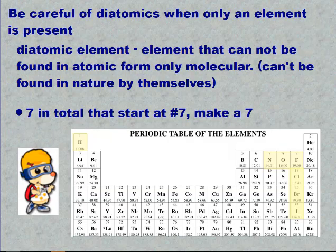Be careful throughout the whole year of diatomics. Diatomics are when an element is present, but it can't be in its atomic form, only its molecular form. In other words, they can't be found in nature by themselves. There's seven diatomic molecules. Hydrogen, and then it starts at seven and it makes a seven.